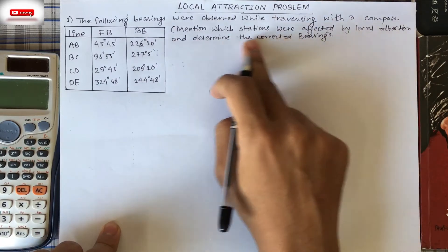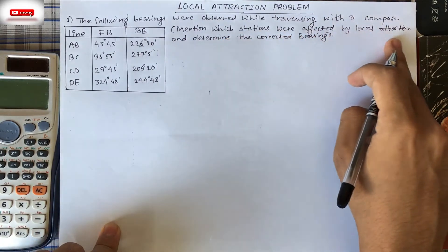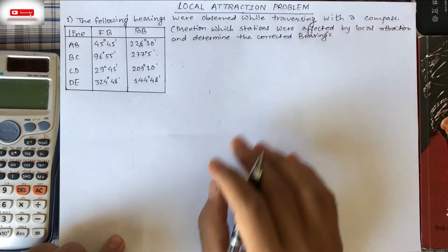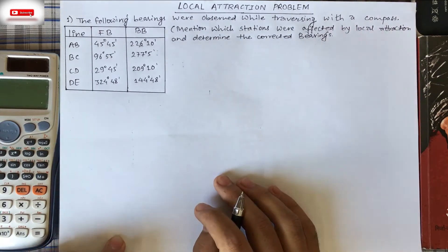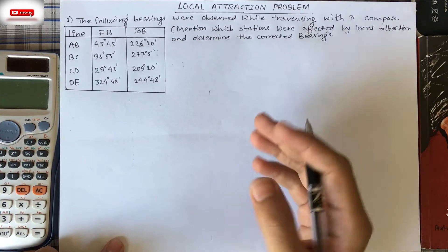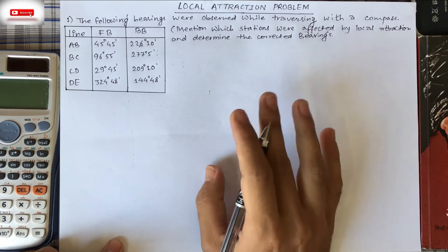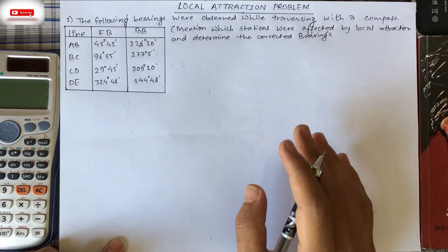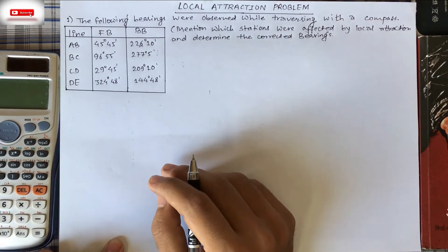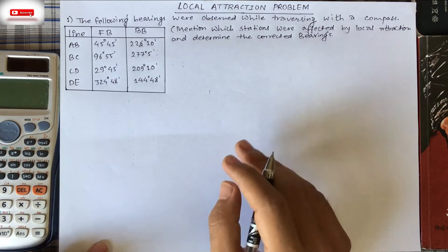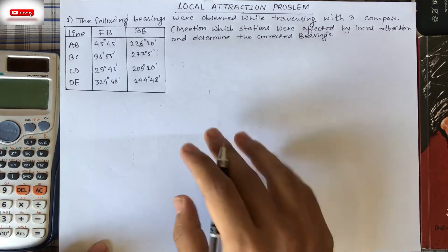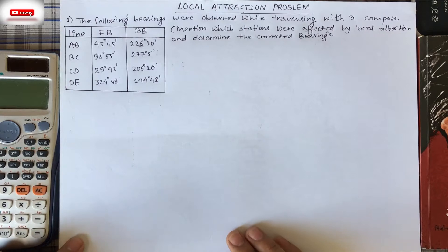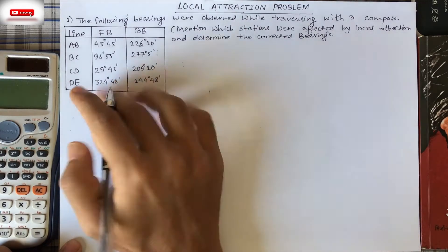Here we have to find which stations were affected by local attraction. Since our question is based on local attraction, we must know at least what it means. Local attraction is a term used to denote any influence which prevents the needle from pointing to the magnetic north in a given locality. We are not learning its definition in depth — rather we are solving its related problem. So let's start solving.